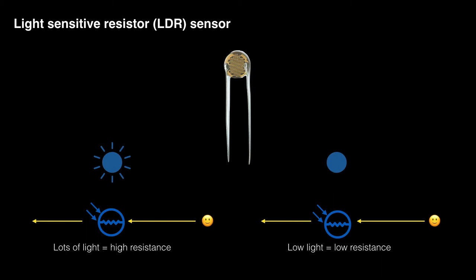With a light-dependent resistor, the material that the light-dependent resistor is made from changes its resistance when it's exposed to light. And that can be white or colored light, or it can be infrared light that our eyes can't see, but an infrared sensor can.